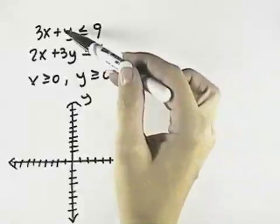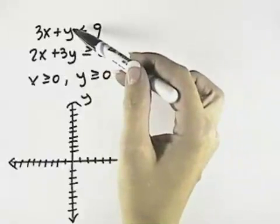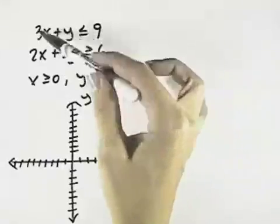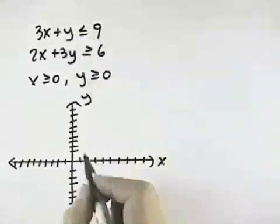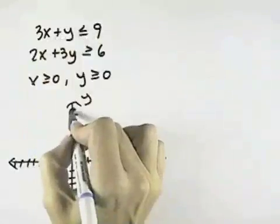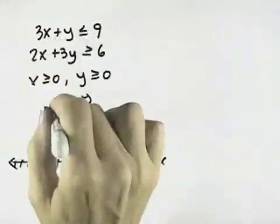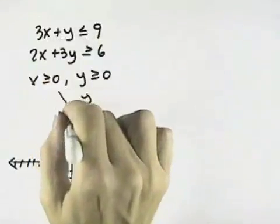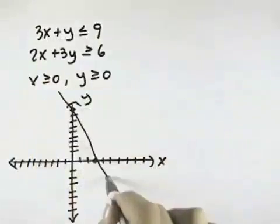If I start with the first equation and look for my intercepts: if y is 0, x is 3. And if x is 0, y is 9. So I'll draw a straight line through those points.